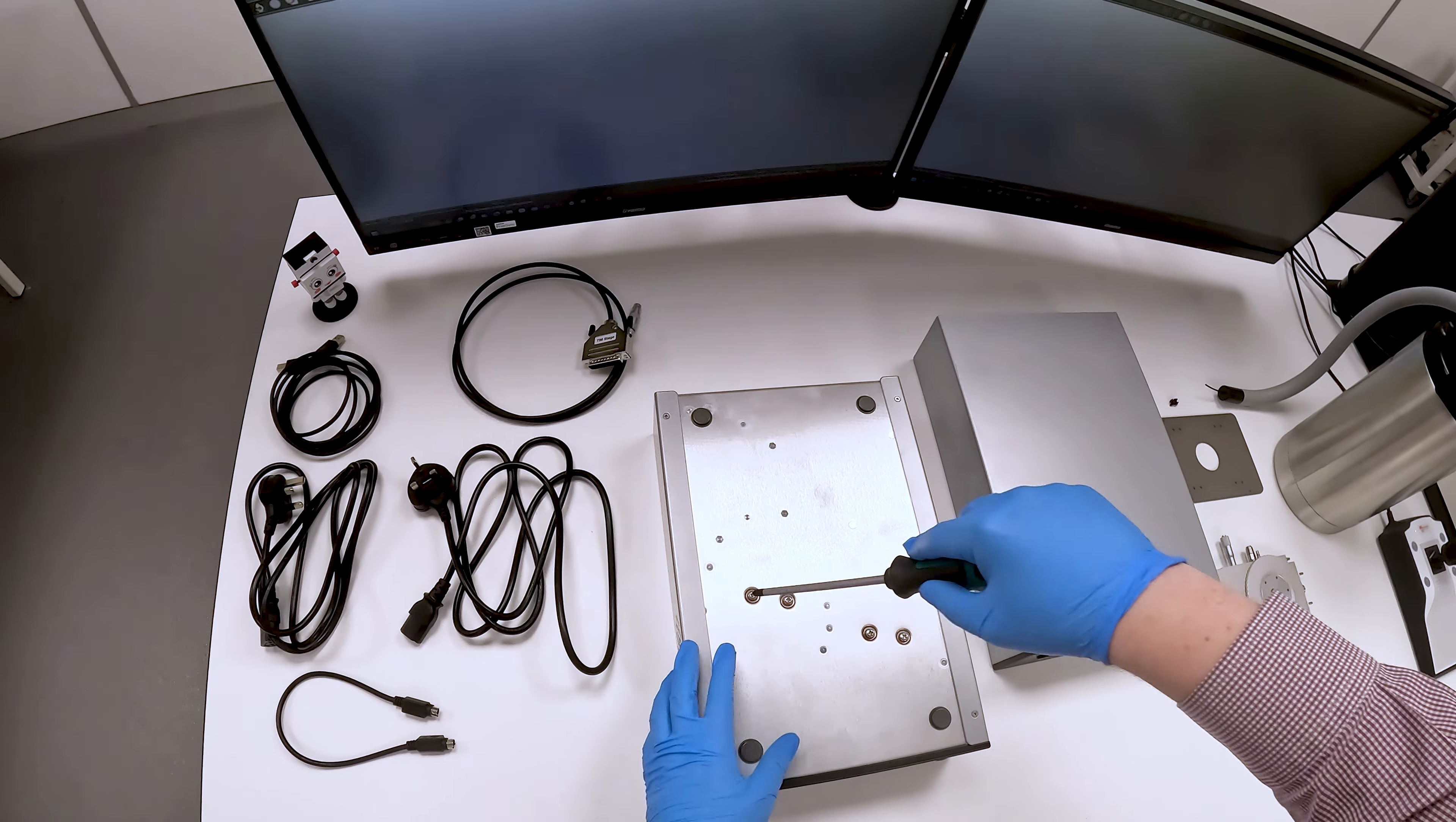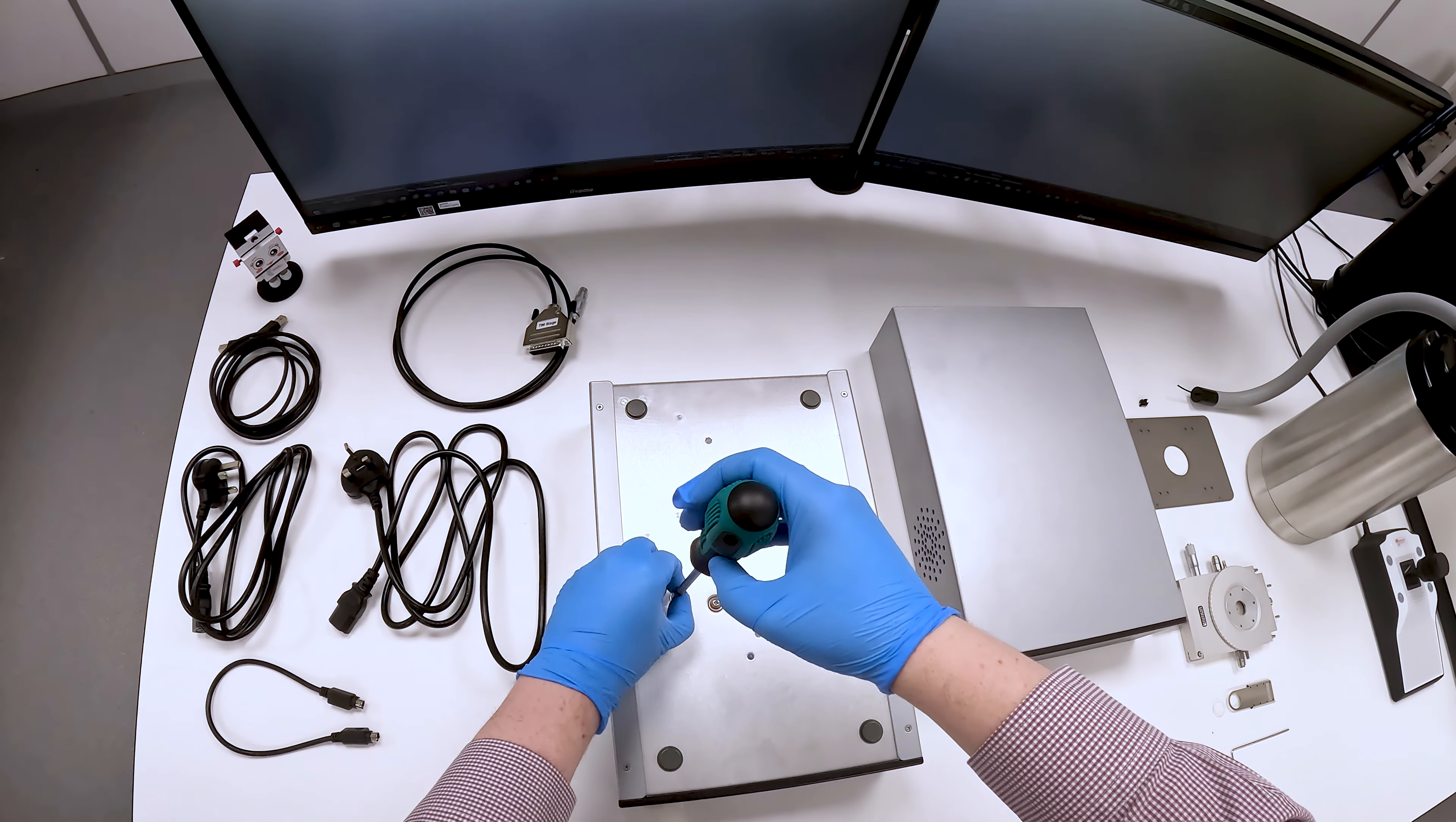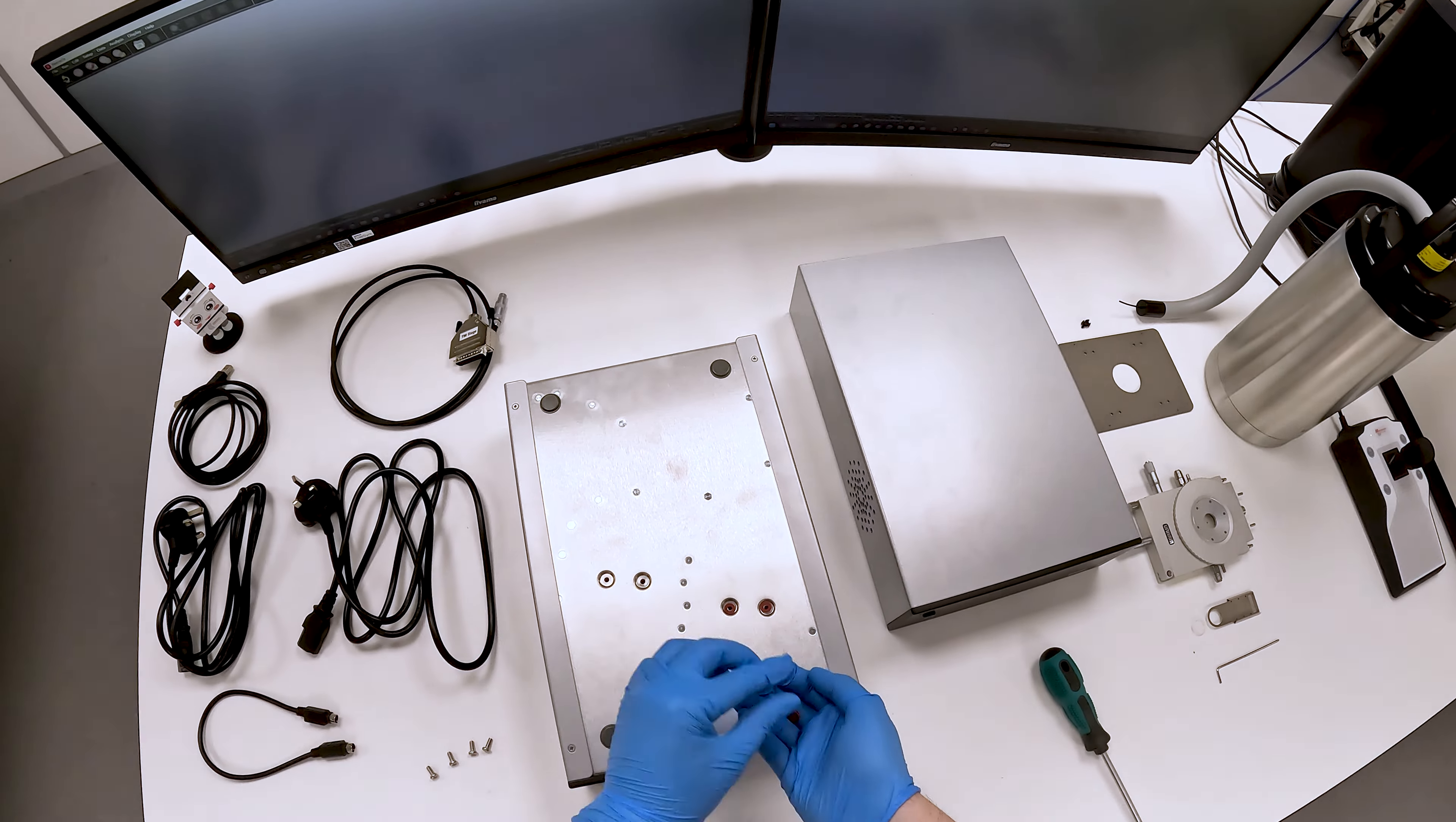First remove the transit screws from the base of the LNP96 liquid nitrogen pump unit. The transit screws should be stored and put back in the base of the unit if it is transported again. Then place the LNP96 on top of the T96.